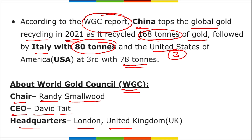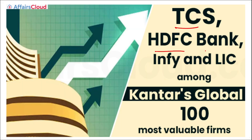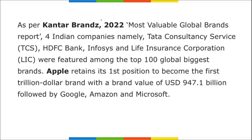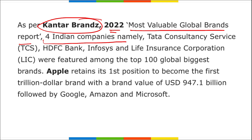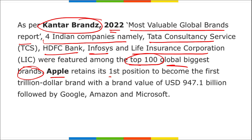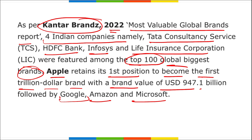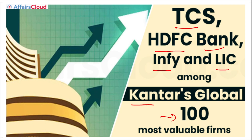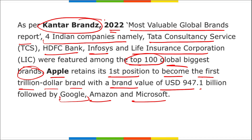TCS, HDFC Bank, Infosys, and LIC are among Kantar's Global 100 Most Valuable Firms. As per the Kantar Brands 2022 Most Valuable Global Brands report, four Indian companies — TCS, HDFC Bank, Infosys, and Life Insurance Company — were featured among the top 100 global brands. Apple retained the first position to become the first trillion-dollar brand with a brand valuation of $947.1 billion, followed by Google, Amazon, and Microsoft.